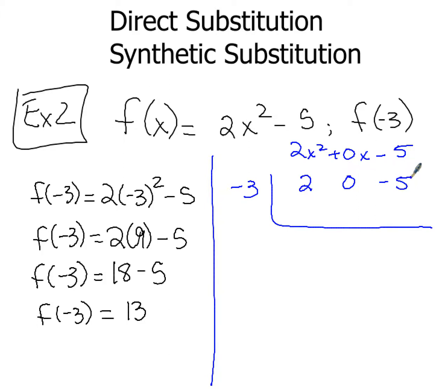So first thing, bring down the 2, -3 times 2, I get -6. Add them up, 0 + -6, I get -6. And again, I multiply -3 times -6, that gives me positive 18. Add them up, and I get 13.